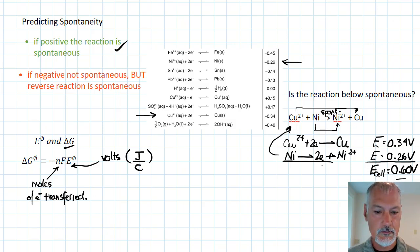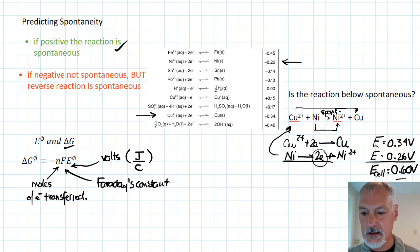In our case, we have two electrons being transferred. And Faraday is our connection between the moles and the coulombs of charge. It's called Faraday's constant. And this is in your IB data booklet. And it has a value of 96,500 coulombs per mole of electrons transferred.